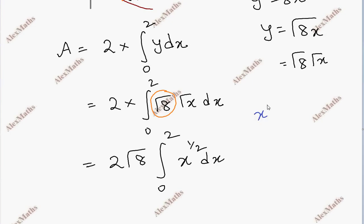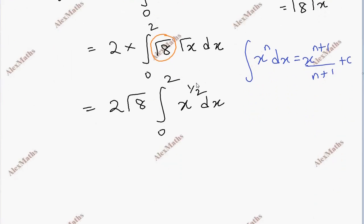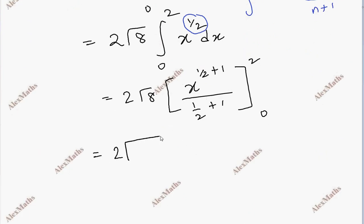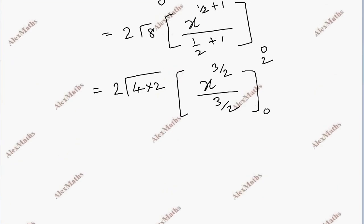Using the basic integration formula: ∫x^n dx = x^(n+1)/(n+1) + c. With n = 1/2, we integrate 2√8 · x^(1/2), giving 2√8 · [x^(1/2 + 1) / (1/2 + 1)] from 0 to 2. This simplifies to 2√8 · (x^(3/2) / (3/2)), which equals 2√8 · (2/3) · x^(3/2), evaluated from 0 to 2.